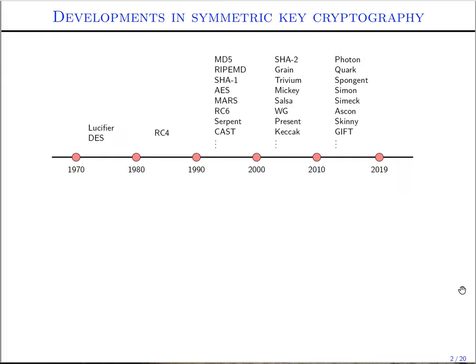Let's start with the developments in symmetric key cryptography in the past 50 years. Starting from DES and Lucifer, many symmetric key cryptography primitives have been proposed. For block ciphers, the most notable competition was the AES competition in the late 90s. This was later followed by the eStream competition for stream ciphers in 2005 and the SHA-3 competition for hash functions in late 2008.